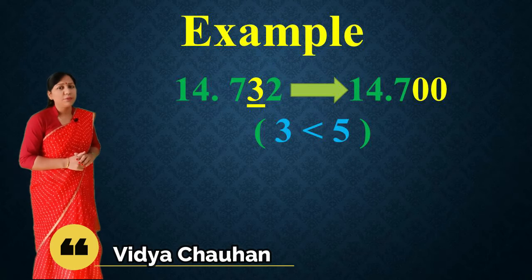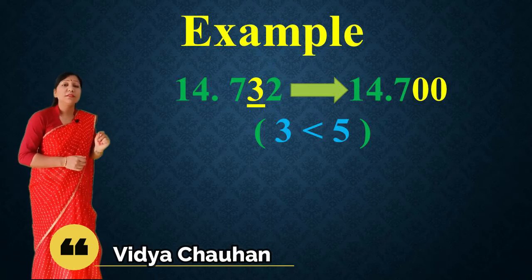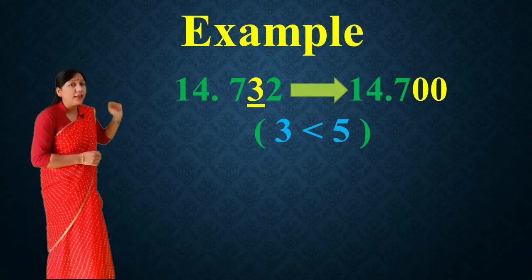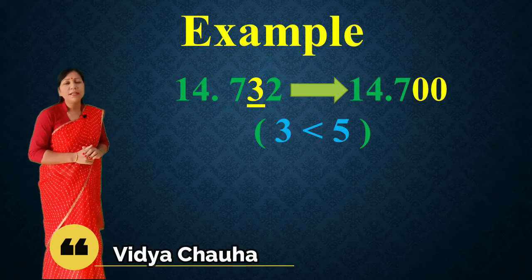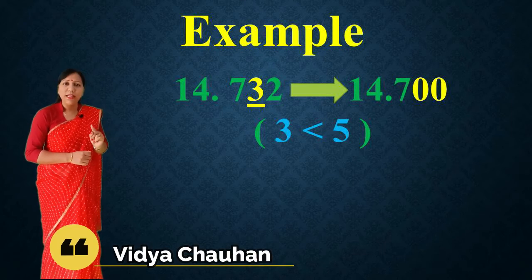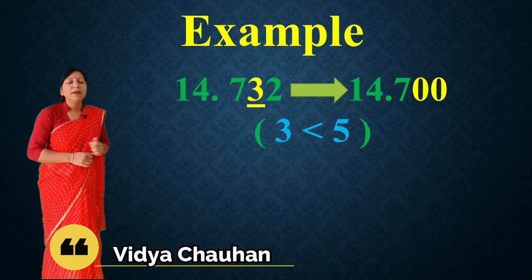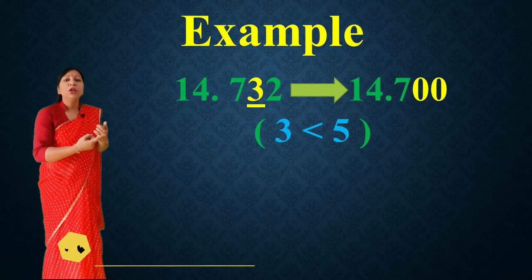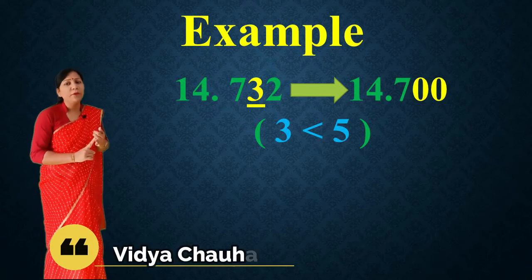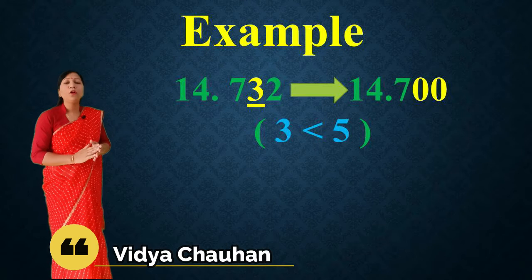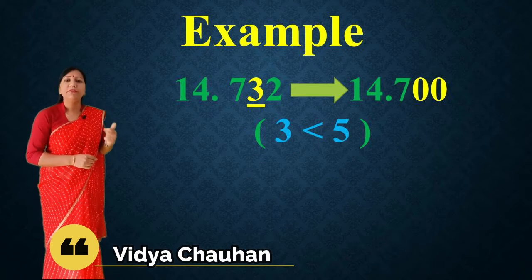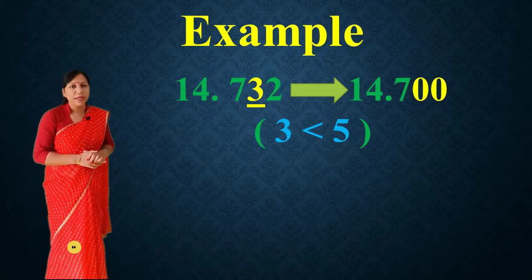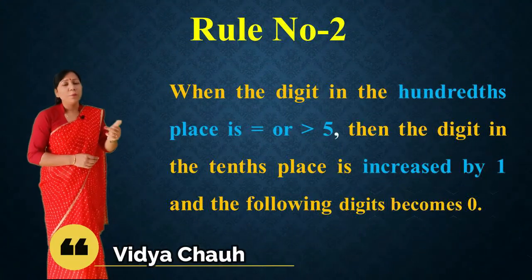For 14.732, we consider the hundredths place digit, which is 3. Since 3 is less than 5, the 3 is rounded off to zero and the digit after it — 2 — also becomes zero. So the rounded value of 14.732 is 14.7.